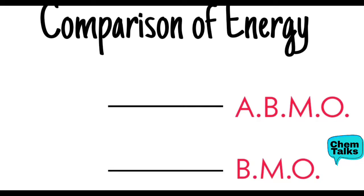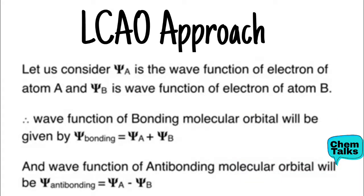Now we will understand the LCAO approach — that is, linear combination of atomic orbitals. Normally we would consider the Schrödinger wave equation since we consider electron wave and particle nature. One way is to take every electron wave function, apply mathematical equations, and calculate electron density. But this is complex, so here we take the LCAO approach — linear combination of atomic orbitals. According to this approach, all information about the atoms is stored in the wave function. We denote ψ_A as the wave function of the electron present in atom A.